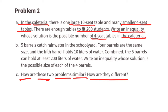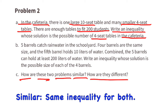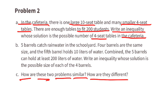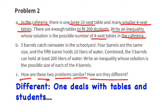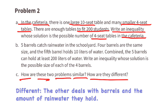C. How are these two problems similar? How are they different? They're similar because they're represented by the same inequality. They're different because one is dealing with tables and the number of students that sit at those tables, and the other is dealing with barrels and the amount of rainwater that each barrel holds.